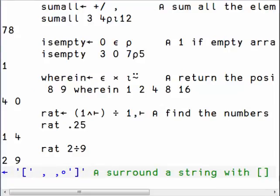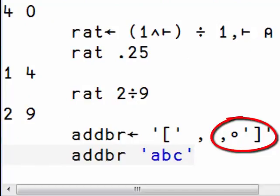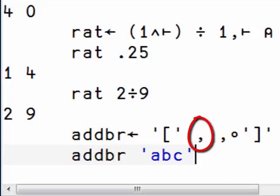Here we want to surround the string with brackets. So the right-hand function is a composed function that catenates the right bracket to the right, and then we catenate simply the result of this with a left bracket.